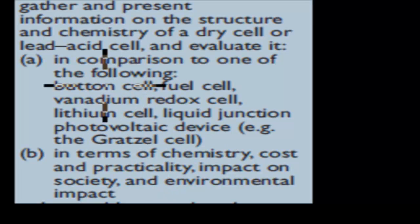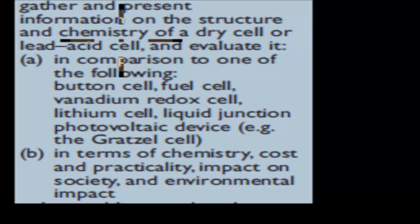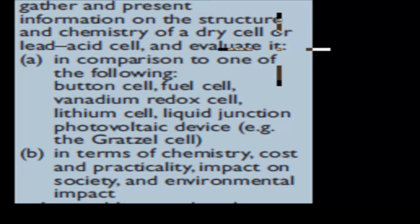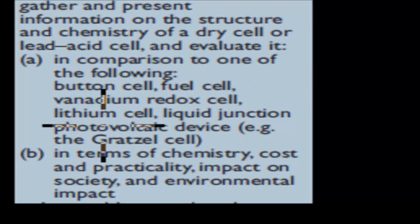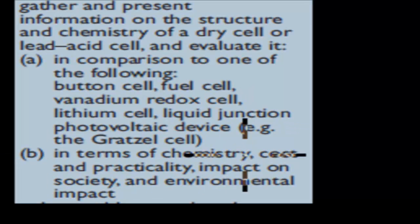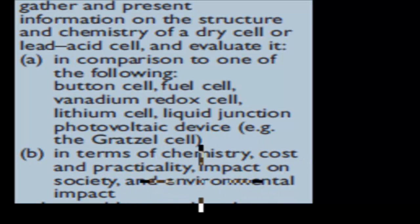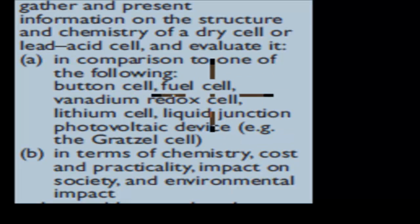The dot point says: gather and present information on the structure and chemistry of a dry cell or a lead cell, and evaluate it A) in comparison to one of the following — button cell, fuel cell, vanadium redox cell, lithium cell, or liquid junction photovoltaic device — and B) in terms of chemistry, cost and practicality, impact on society, and environmental impact.